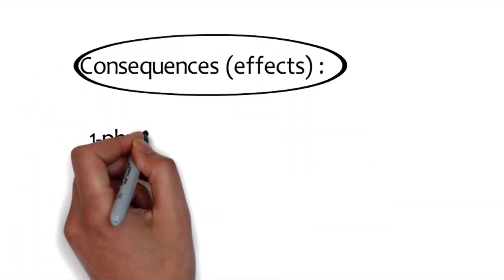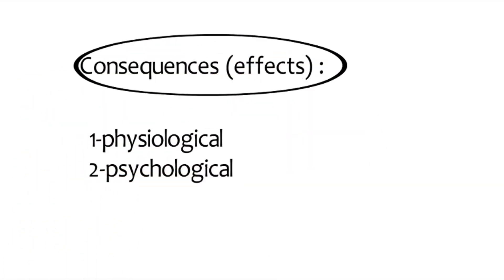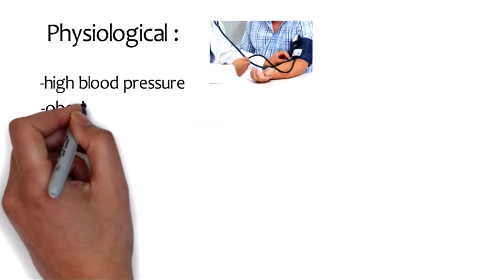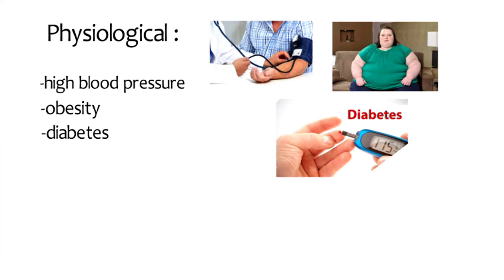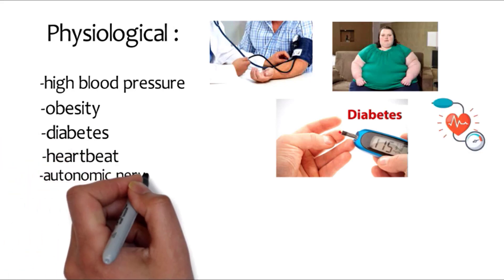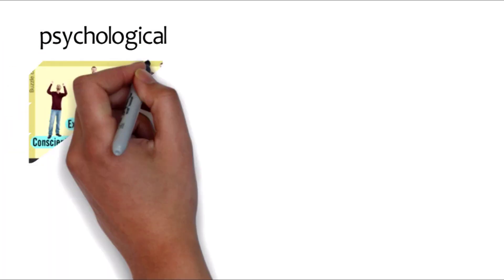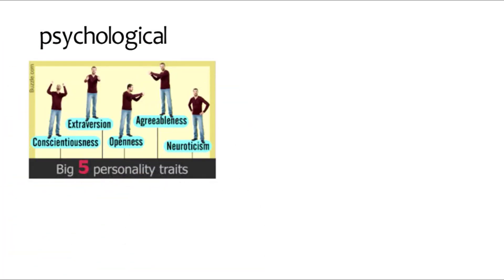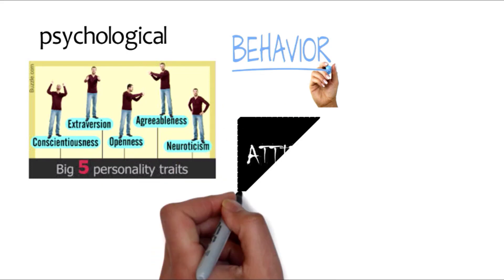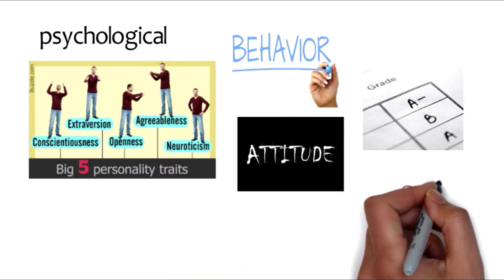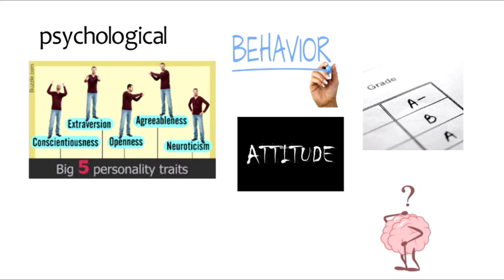The consequences of anxiety in students can be both physiological and psychological. Physiological affects include high blood pressure, obesity, diabetes, heartbeat, and the whole autonomic nervous system. The other consequence is psychological that results in the change of personality traits, behavior, attitude, impending results, and in addition to all the foregoing, the major effect could be memory loss in a student.